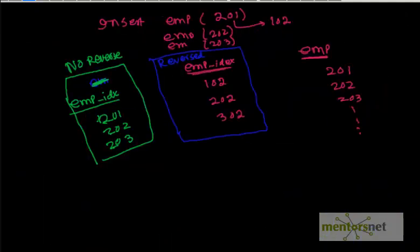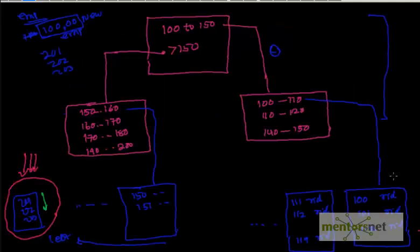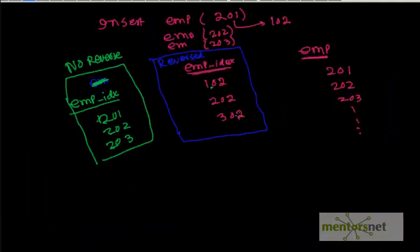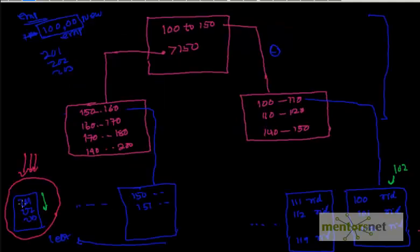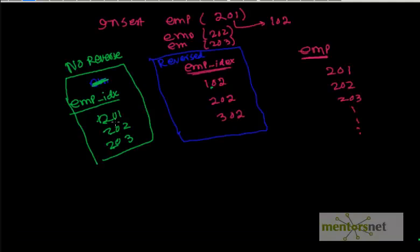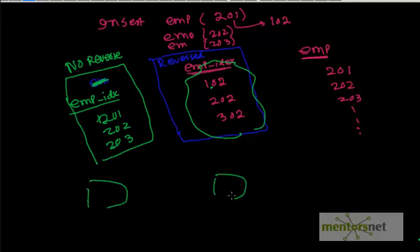But the moment I reverse it, what is going to happen? 102 is going to go somewhere here, 202 somewhere very far away, and 302 somewhere even further. The idea behind this reverse key is by reversing the key, I spread this employee index over an area in the leaf node.